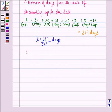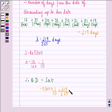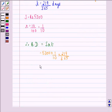Now, S is rupees 5300. R is 10%, that is 10 by 100, which equals 1 by 10. Therefore, BD equals 5300 times 1 by 10 times 219 divided by 365, and that equals rupees 318.